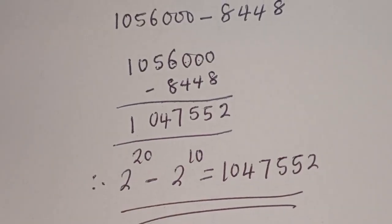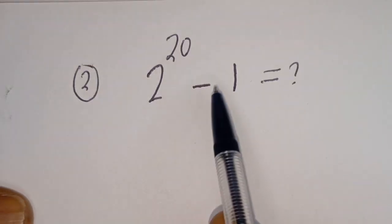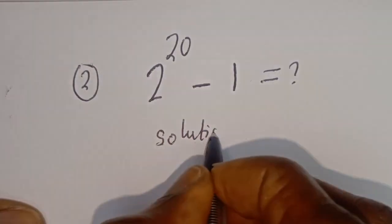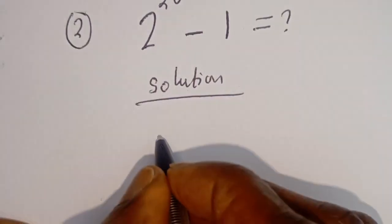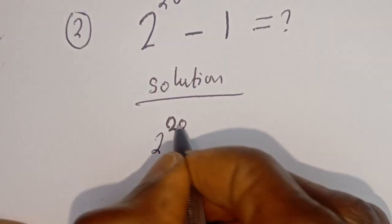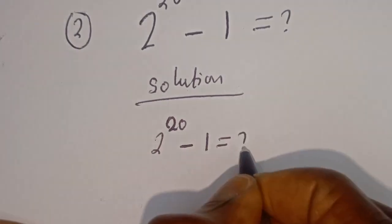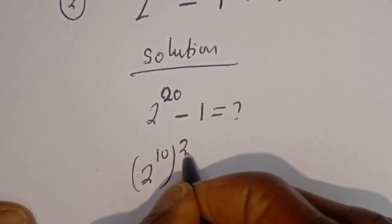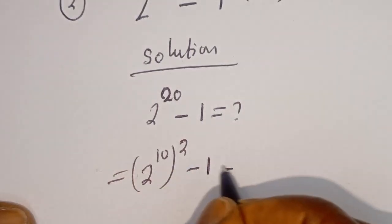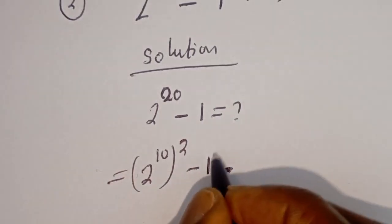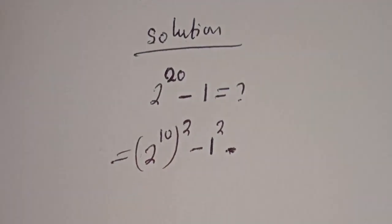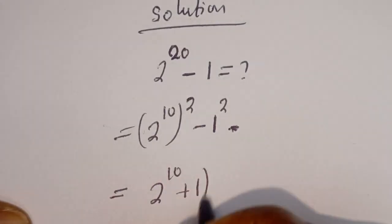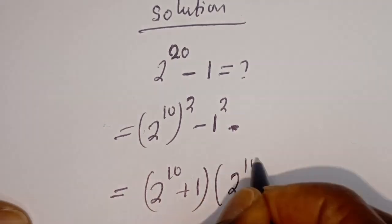Now let's solve the second question. If you have 2 to the power of 20 minus 1, what is the answer? Solution: 2 to the power of 20 minus 1 equals what? 2 to the power of 20 can be written as 2 to the power of 10, squared, minus 1. This 1 can also be written as 1 squared. And this is in the form of a perfect square. Then this is equal to 2 to the power of 10 plus 1, bracket, 2 to the power of 10 minus 1.